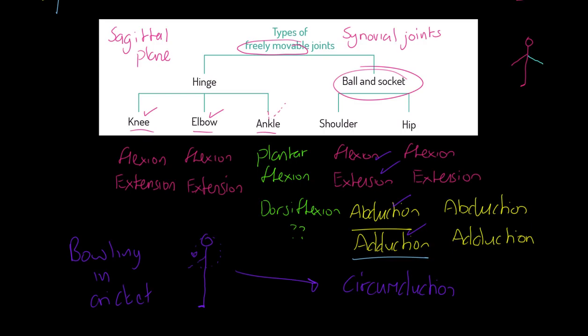Finally, the shoulder, and this is the same for the hip joint actually, can also undertake what's called rotation. Rotation is kind of a tricky one. Rotation occurs when a ball and socket joint turns in its own socket. So this is where we're going to take bowling and now we're going to talk about spin bowling in cricket. Think about the bowling arm twisting in its own socket as it circumducts. This is an example of rotation.